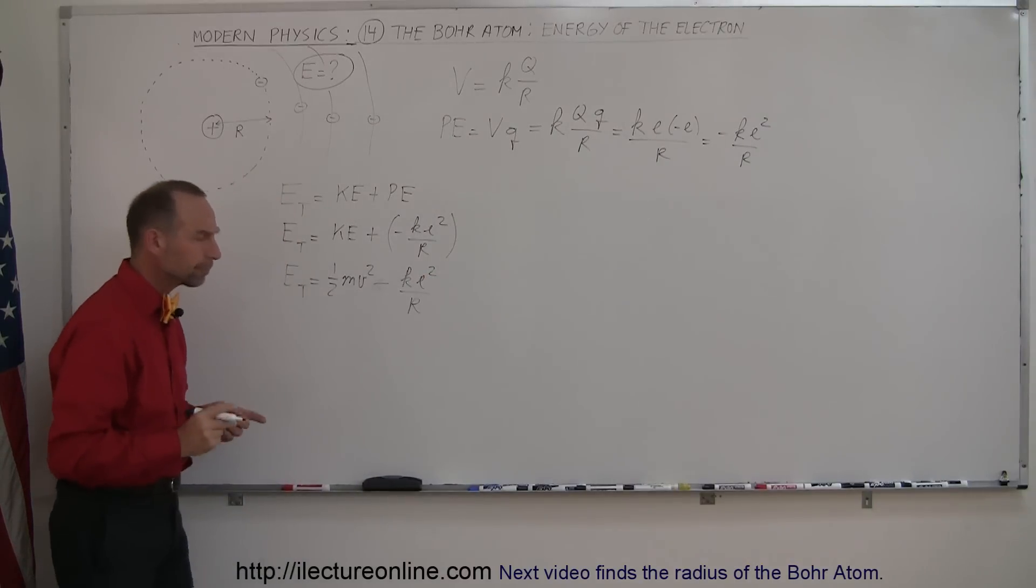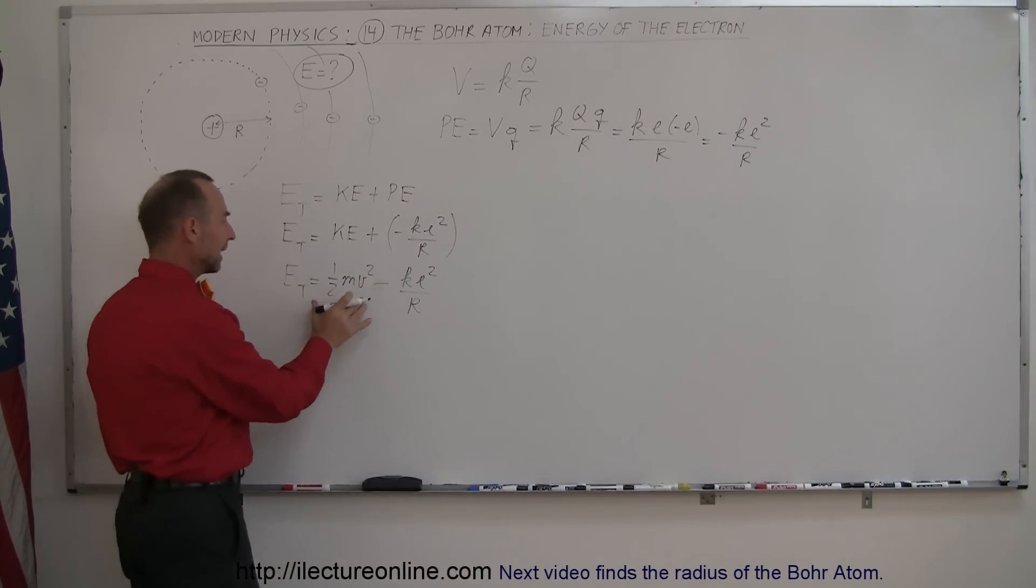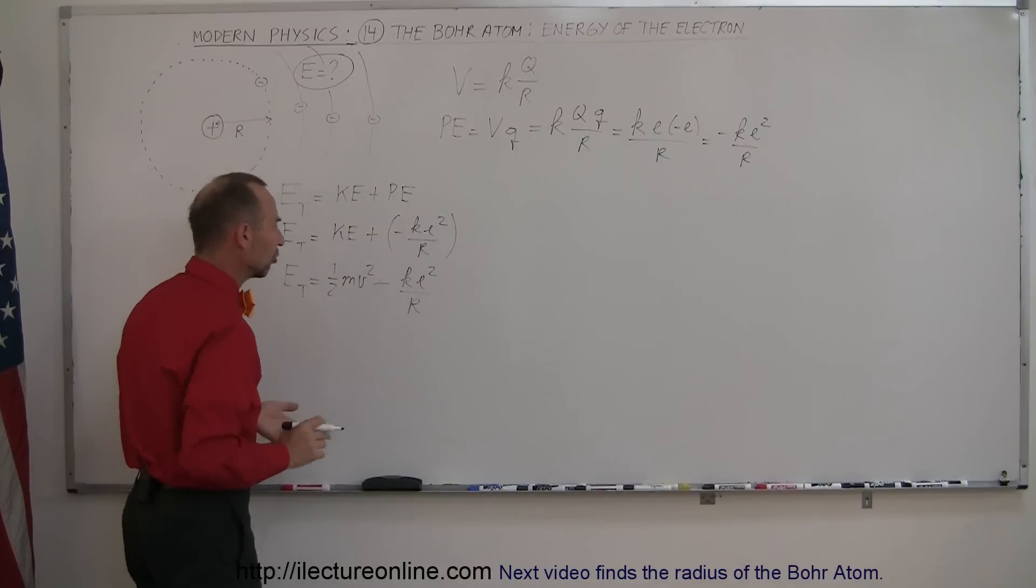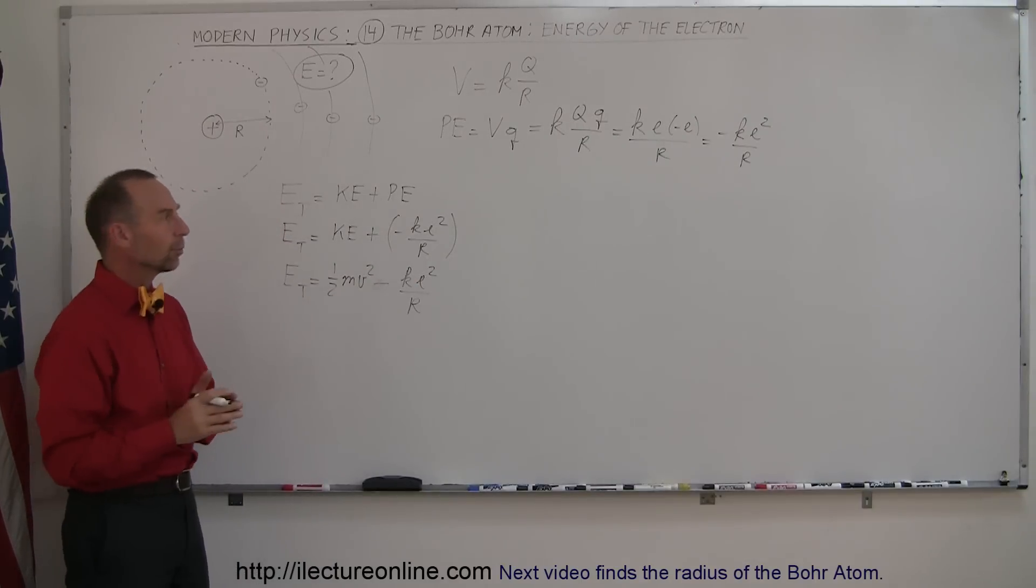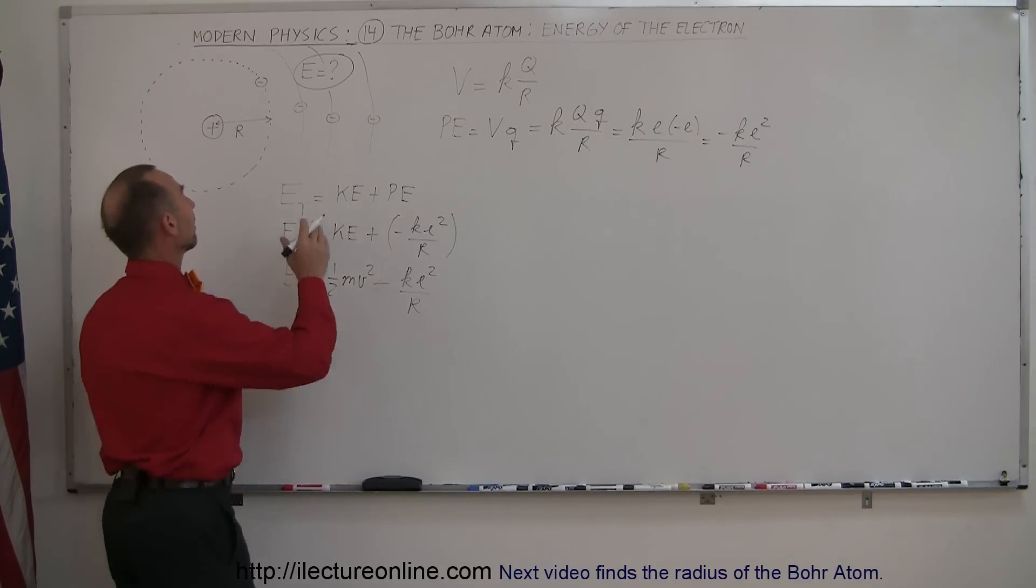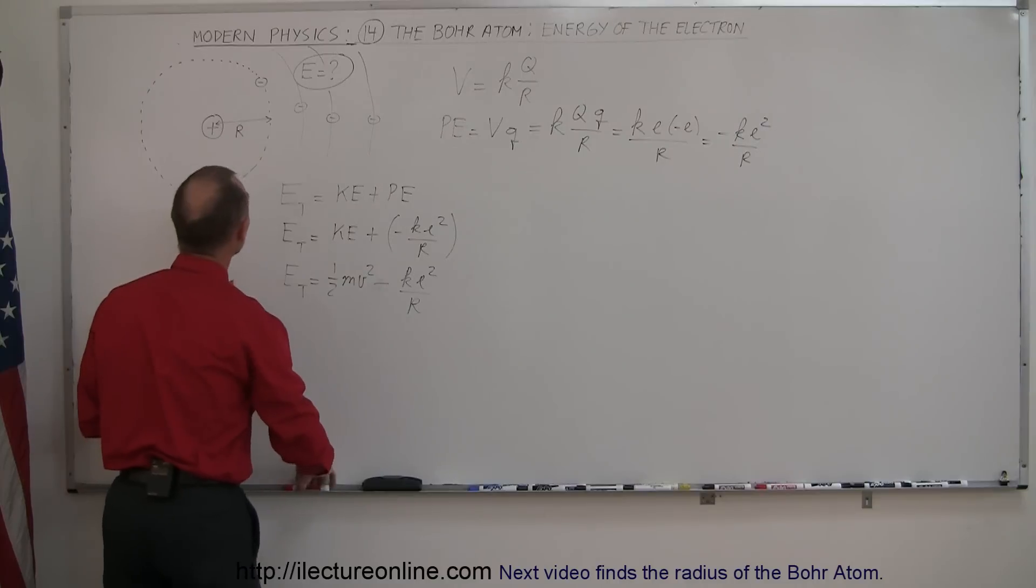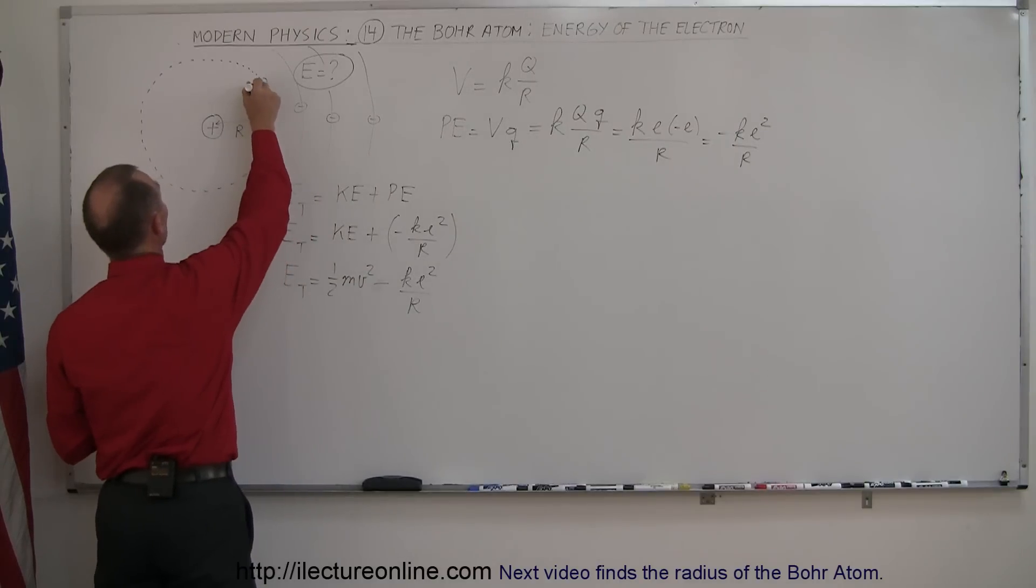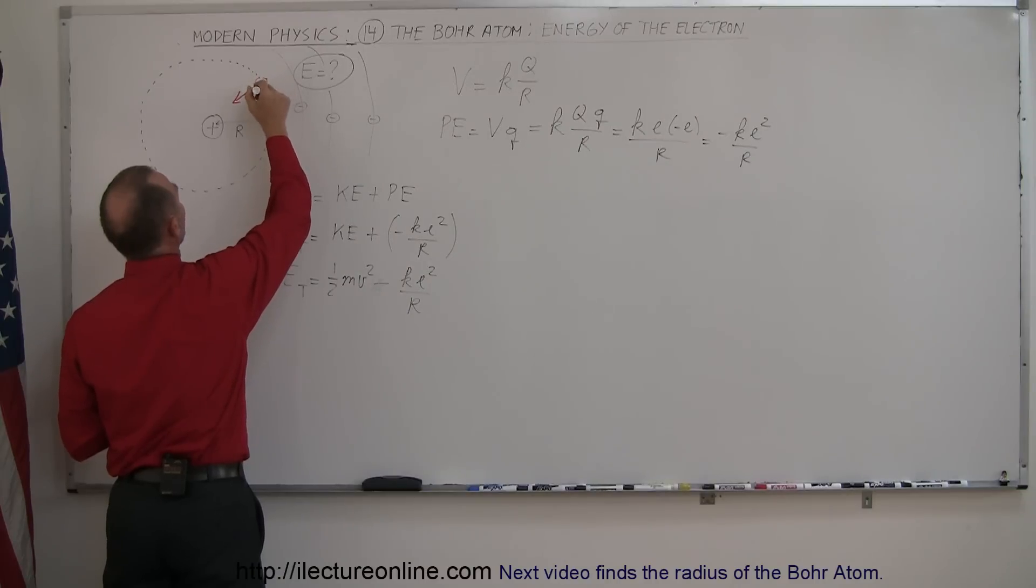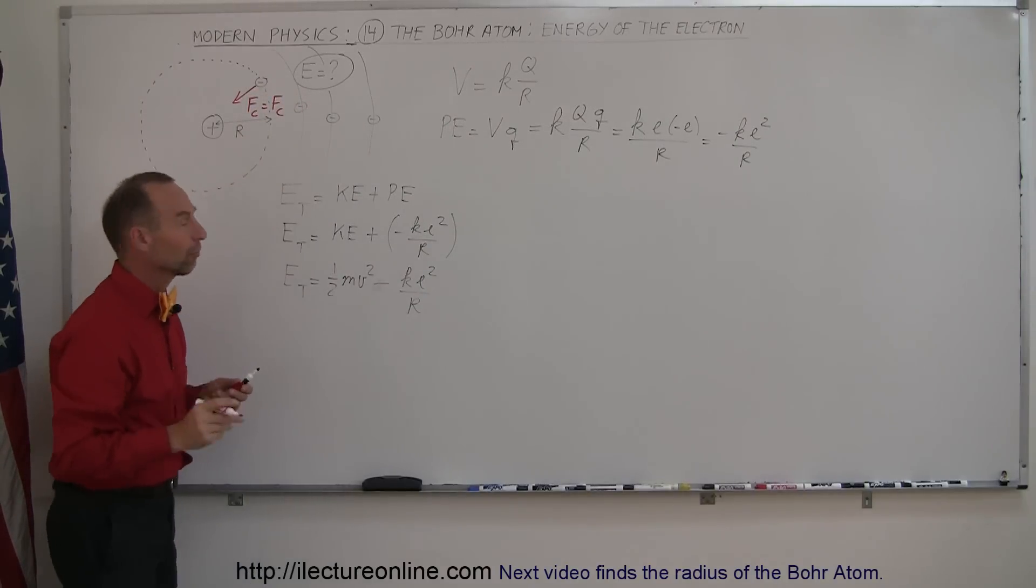Now we want to express the kinetic energy in the same terminology as the potential energy. For that we need to assume that the electron is in an orbit and it's going to feel a force of attraction due to the Coulomb force in the direction of the proton, and that Coulomb force must equal the centripetal force.